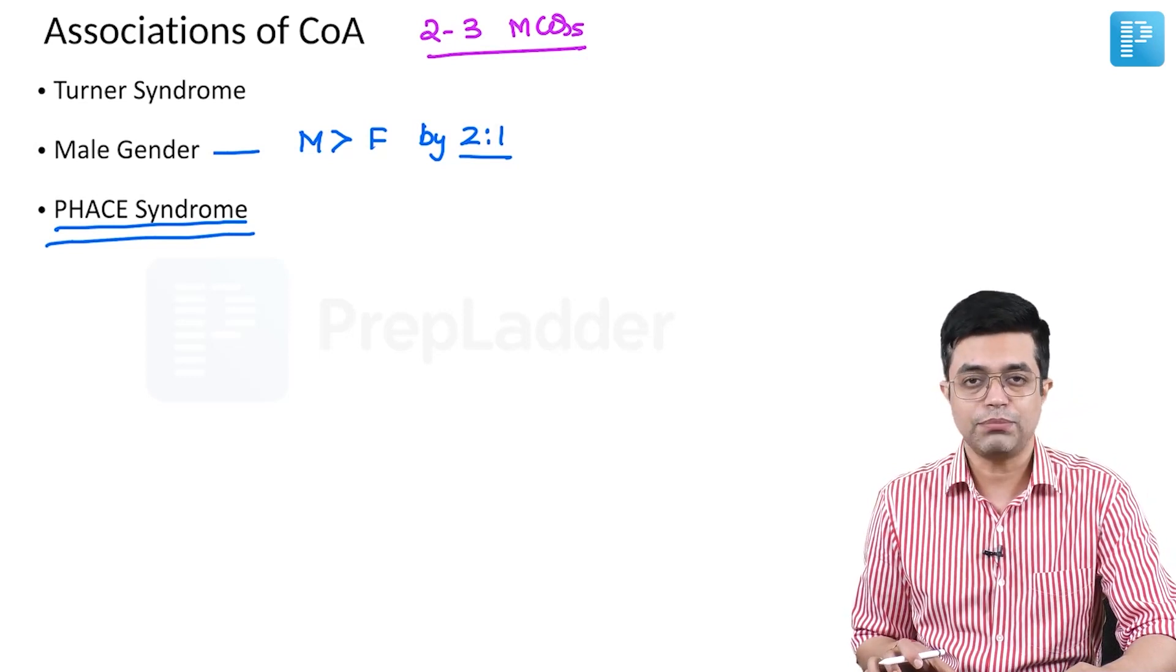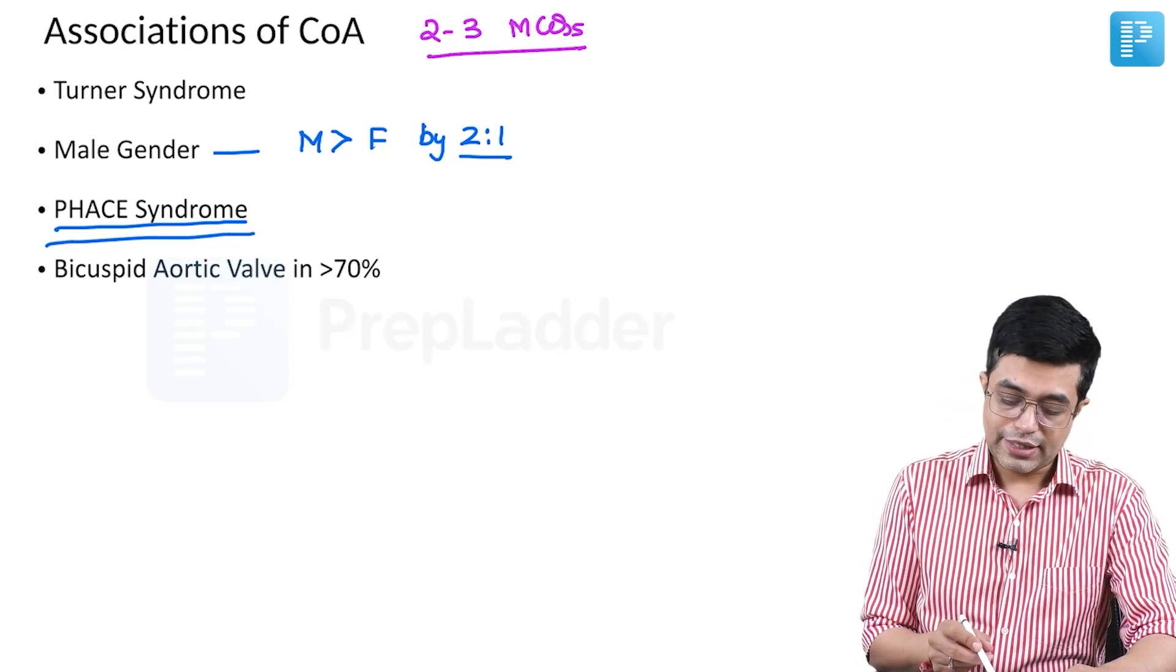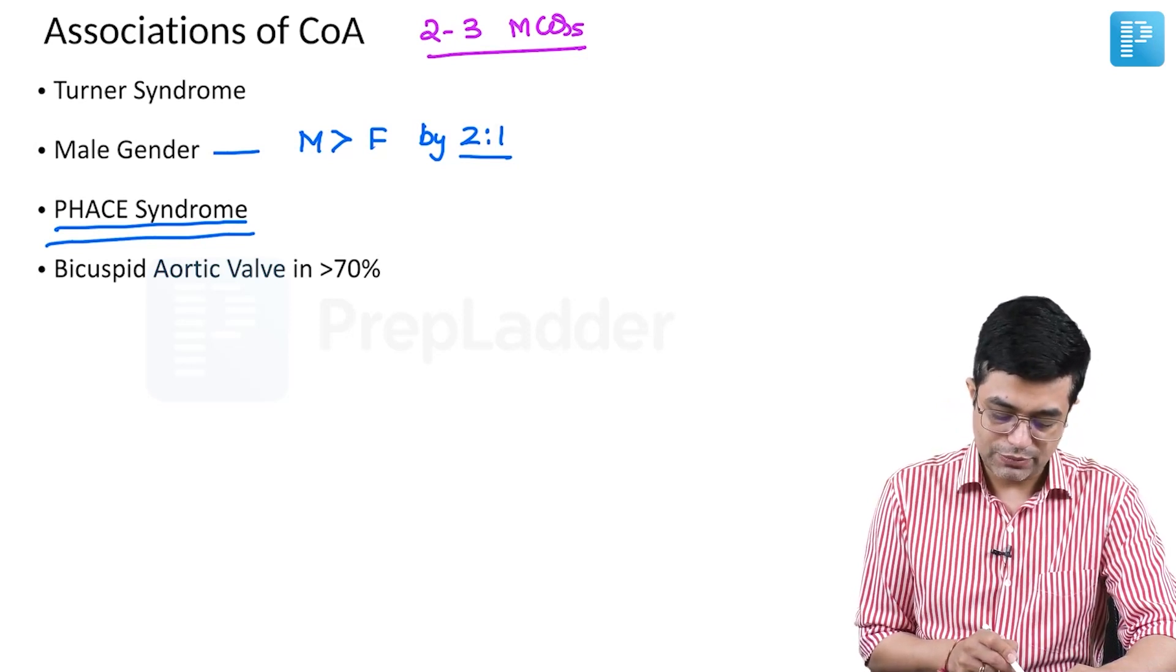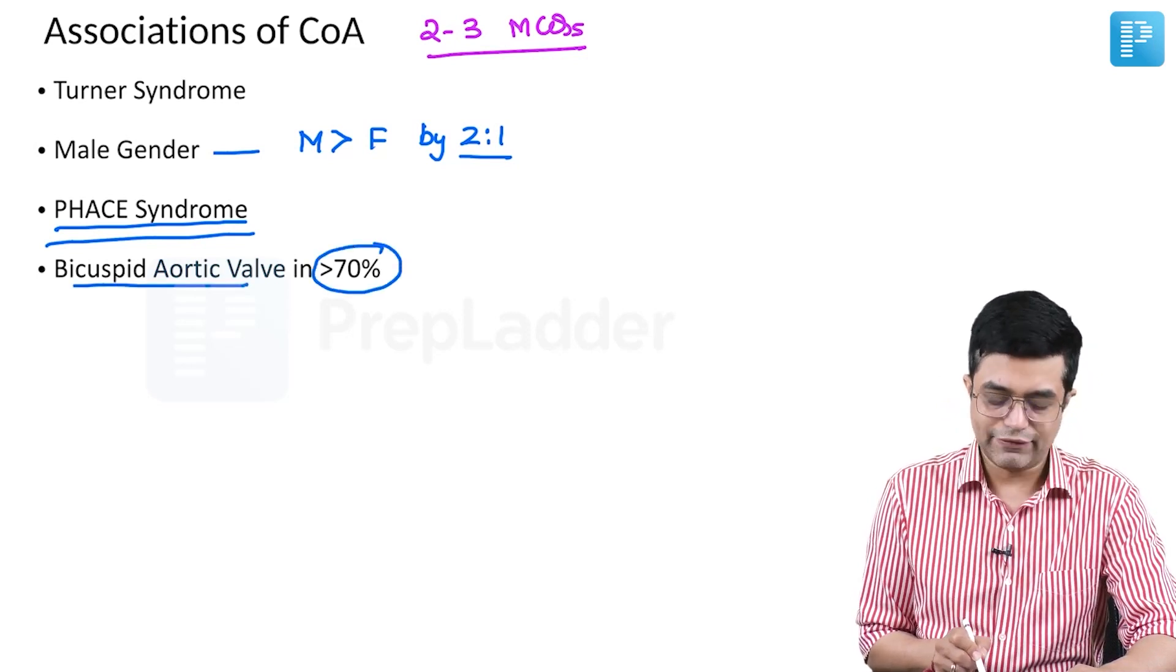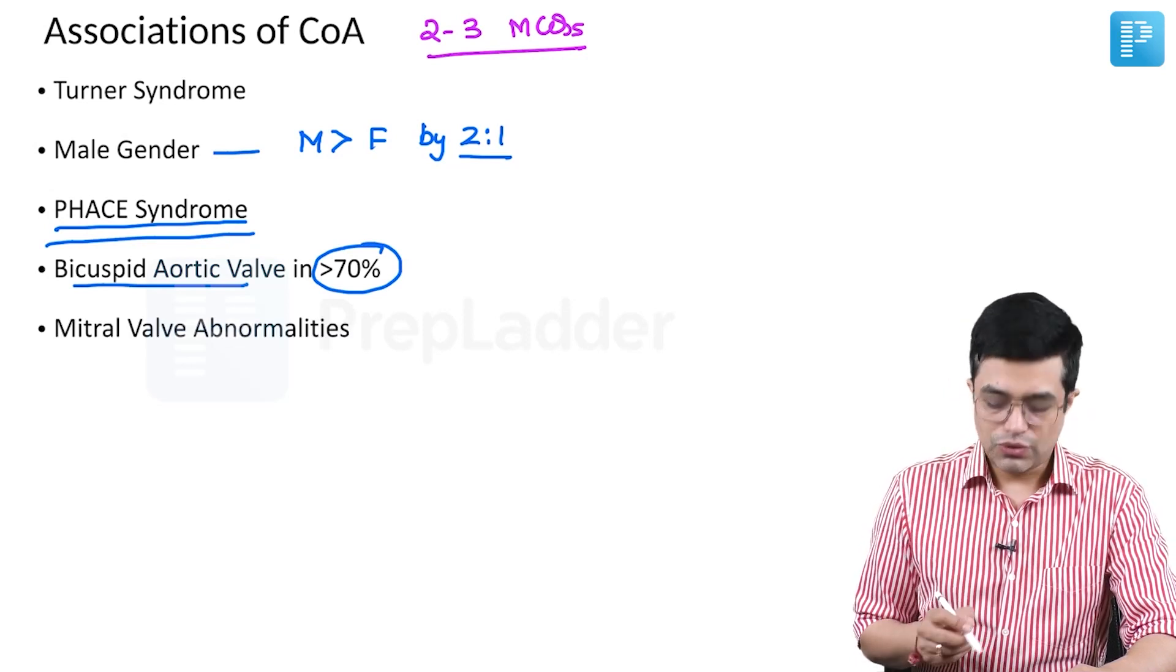Fourth is bicuspid aortic valve. Coarctation is strongly associated with bicuspid aortic valve in more than 70% of these cases. Mitral valve abnormalities are also known to occur.